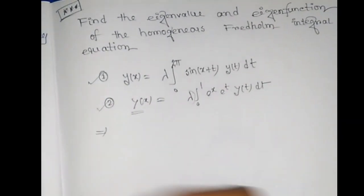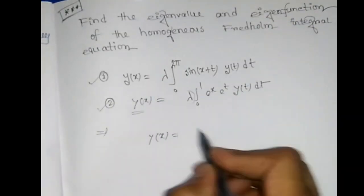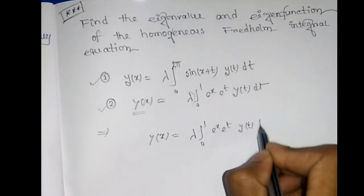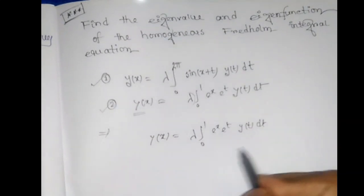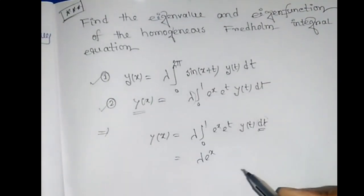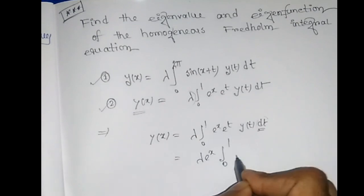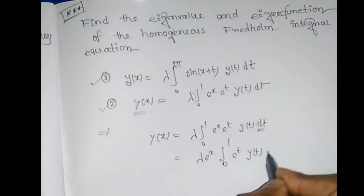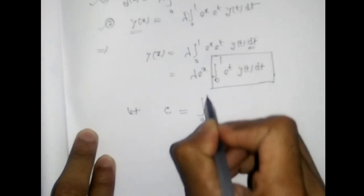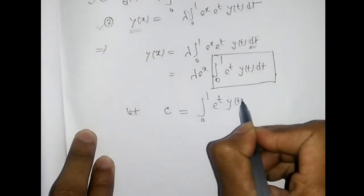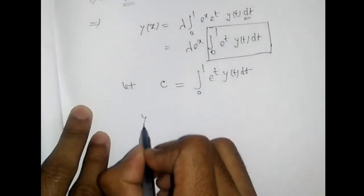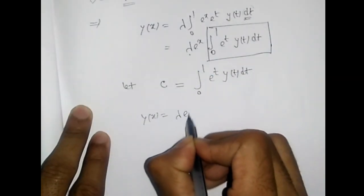First we solve number two: y(x) = λ ∫₀¹ eˣ · eᵗ · y(t) dt. Since the integral is over t, eˣ can be factored out, giving λ eˣ ∫₀¹ eᵗ y(t) dt. We rename this integral as C, so C = ∫₀¹ eᵗ y(t) dt, and then y(x) = λ eˣ C.